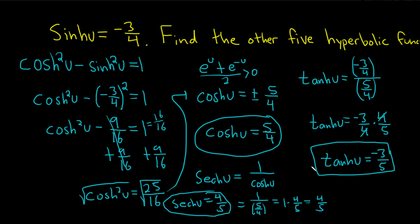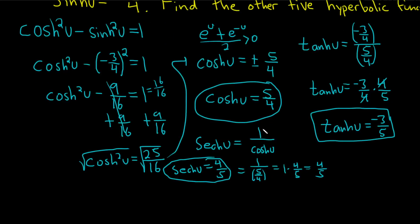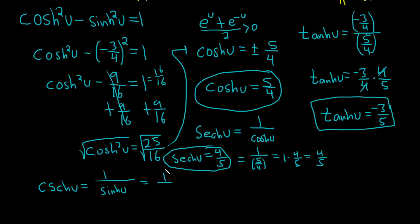We've got cosh, tanh, hyperbolic secant. We need the hyperbolic cosecant. That one's pretty easy. So hyperbolic cosecant of u. That's 1 over the hyperbolic sine of u, which is 1 over, and I already forgot what it was. It's negative 3/4. It's 1 over negative 3/4. And again, 1 divided by negative 3/4 is really 1 times the reciprocal, so 1 times negative 4/3, which is negative 4/3. The hyperbolic cosecant of u is negative 4/3.